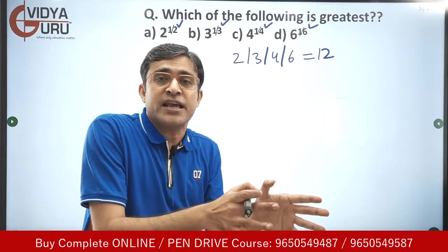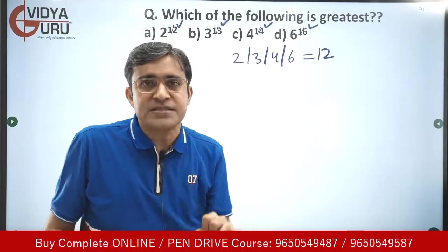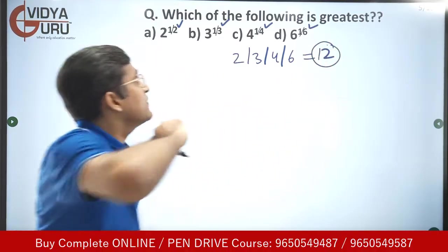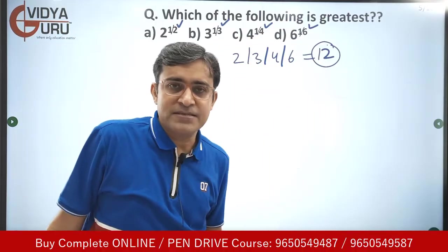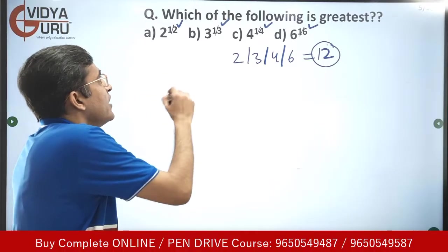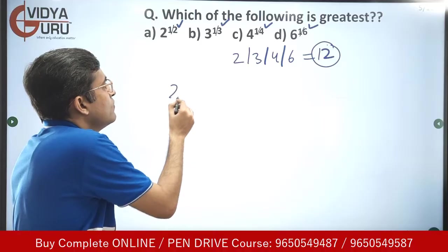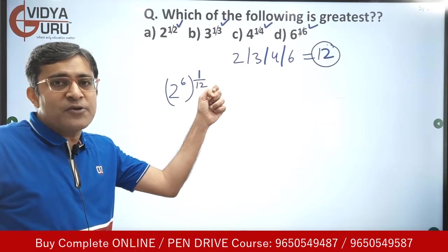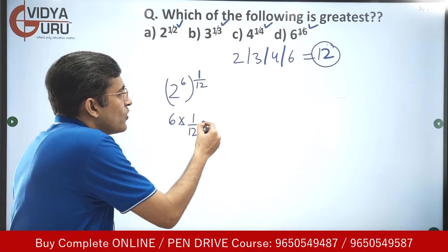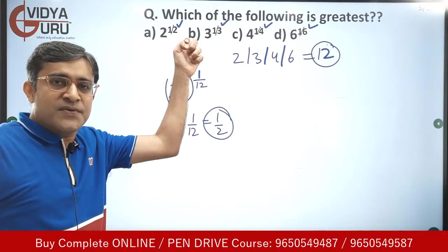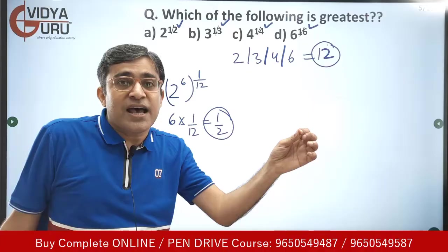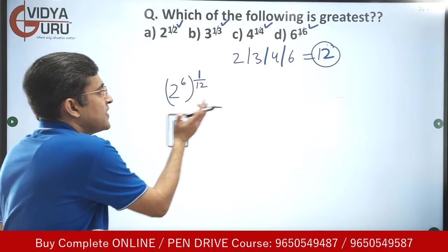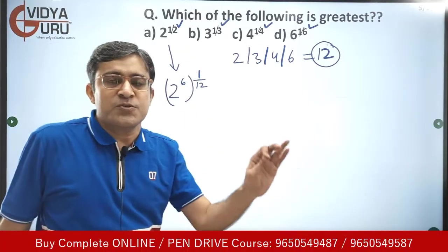To make powers equal, I rewrite each term with an outer power of 1/12. The first term: 2^(1/2) = (2^6)^(1/12), because 6 × (1/12) = 1/2. So the first term becomes (2^6)^(1/12).